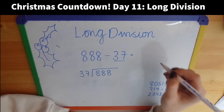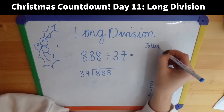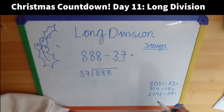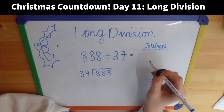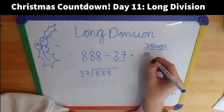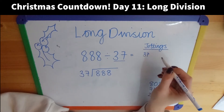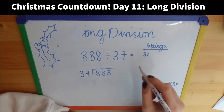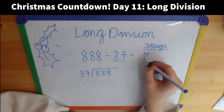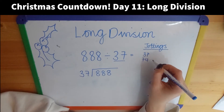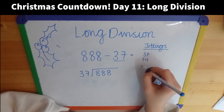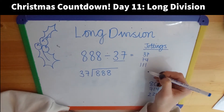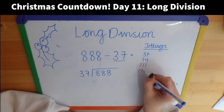A top tip is to make some jottings. Because I'm seeing how many times 37 goes into this number, I'm going to make some jottings of 37. So 37, and then 37 add 37 — I'm just going to do this mentally, but you could do some additions or multiplications if it's easier. So that's going to be 74, adding on 37 gives me 111, and then that would be 148.